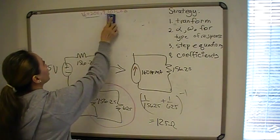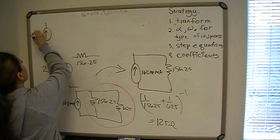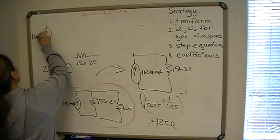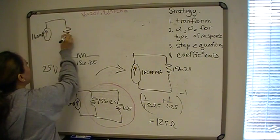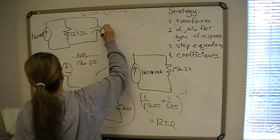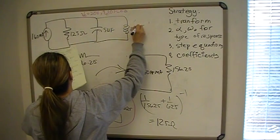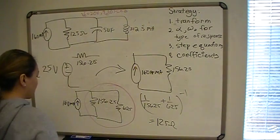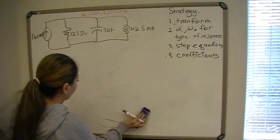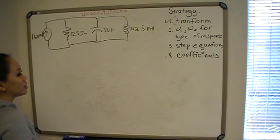Redrawing the circuit as the switch closes: we have 160 milliamps in parallel with 125 ohms, in parallel with 5 microfarads, in parallel with 312.5 millihenries. Now we have a parallel RLC circuit. We need to find alpha and omega naught to figure out what our step equations will be.